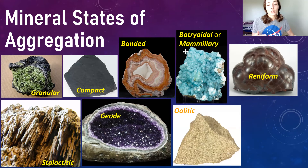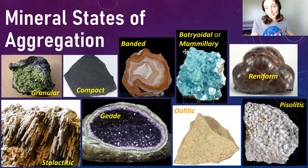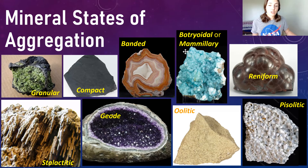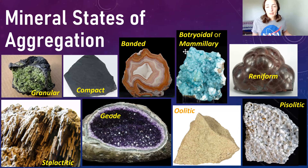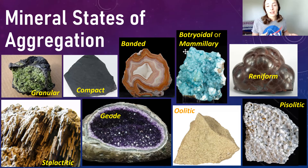Next we have oolitic and pisolitic states of mineral aggregation, which are similar to one another but oolitic is on a smaller scale than pisolitic. Oolitic and pisolitic typically refer to carbonate minerals, because ooids and pisoids are grains coated in carbonate material and compacted and cemented into carbonate rocks in carbonate shelf environments. However, pisolitic mineral aggregation can also describe minerals such as bauxite.